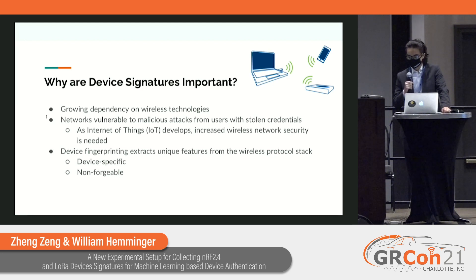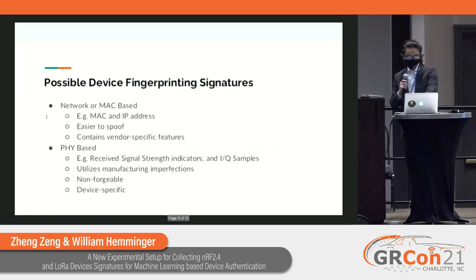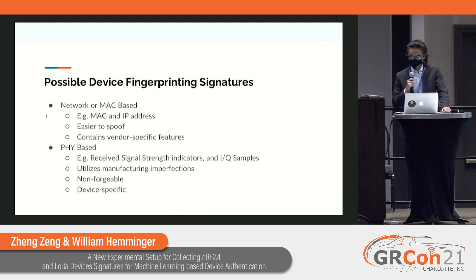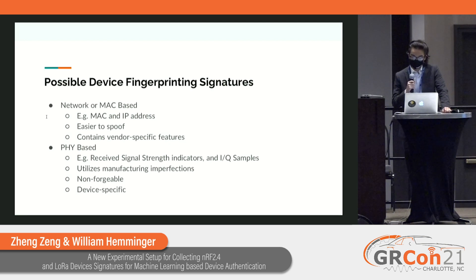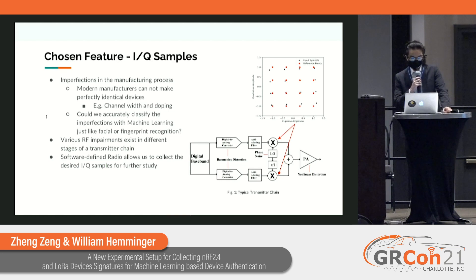These unique features can be found across the wireless protocol stack, but ideally what we want is features that are device-specific and non-forgeable. For example, MAC and IP addresses in the MAC and network layer are used to track devices in the network, but they are easy to spoof and manipulate with software. Looking deeper into the physical layer, we have features such as received signal strength and IQ samples. We want features related to manufacturing imperfections, so we eventually chose to look at IQ samples, as the imperfect manufacturing process leaves non-forgeable features in them.